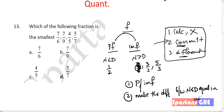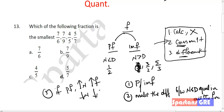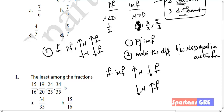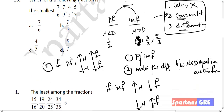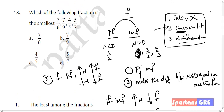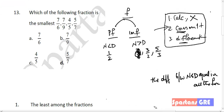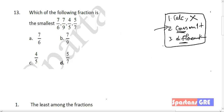The third step: if a fraction is a proper fraction, then more the numerator, more the fraction value — and less the numerator, less the fraction value. If it is an improper fraction, then more the numerator, less the fraction value — and less the numerator, more the fraction value. These are the three steps of the differences method algorithm.